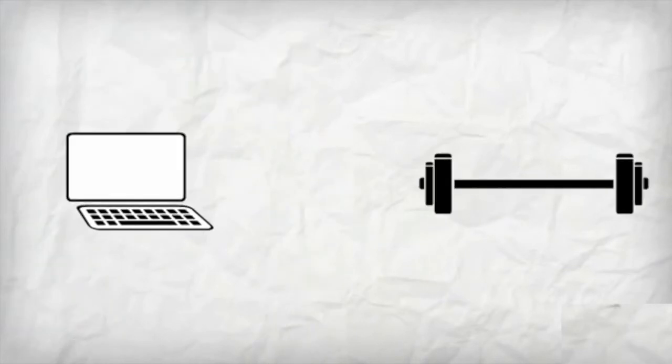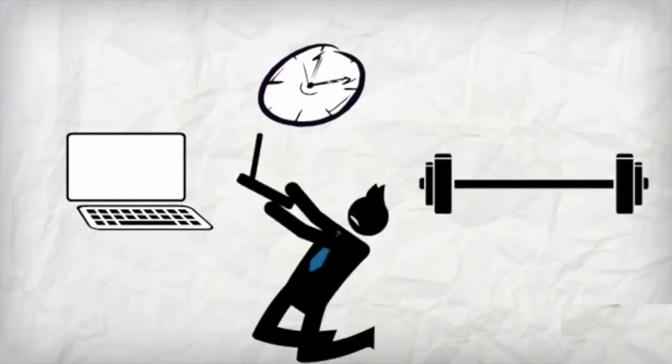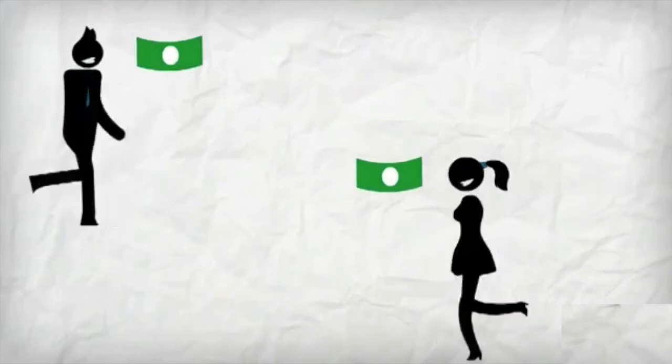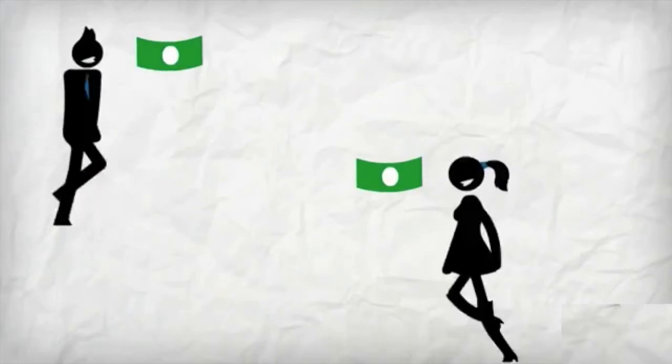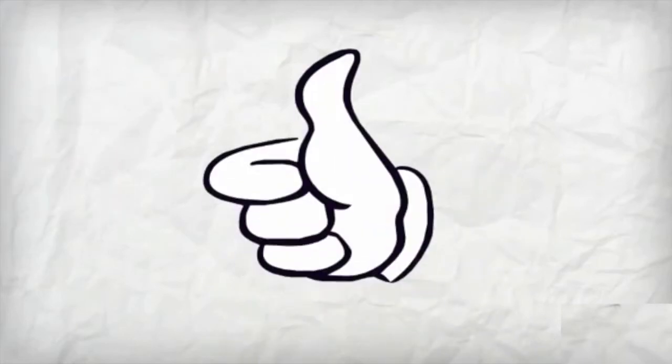Oftentimes, students want a way to earn extra money, but it is hard to find time between studies and extracurricular activities for that to happen. Envoy will solve that problem by offering students a way to easily earn money with flexible hours doing something as simple as cruising around campus. We don't think it can get much easier than that.